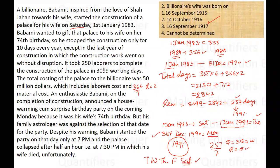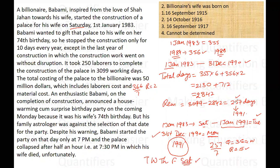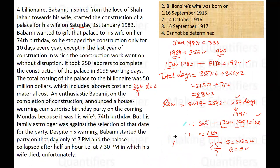Next question: on which date was the billionaire's wife born? From the discussion, we know there are 257 days left in the year 1991. We need to find the date corresponding to the 257th day of 1991.